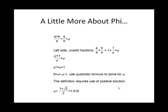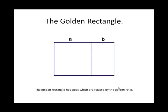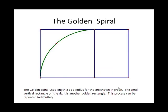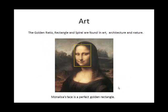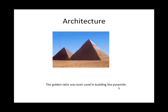Here is the derivation of phi. The golden rectangle has sides which are related by the golden ratio. The golden spiral uses length A as a radius for the arc shown in green. The small vertical rectangle on the right is another golden rectangle. The golden ratio rectangle and spiral are found in art, architecture, and nature.